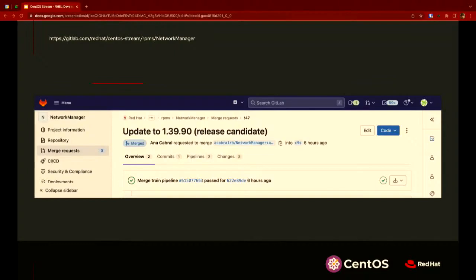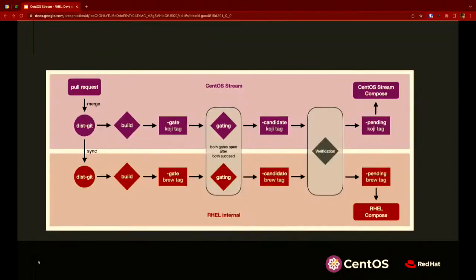This merge request was merged. Looking back at the diagram, we're about here in the process. The merge request was merged, and the maintainer can kick off a build in the Stream infrastructure. These are kept in sync by automation — a build happens in the Stream infrastructure, and then there's a corresponding build inside Red Hat. This allows us to verify and test on the bits that RHEL is actually going to ship. Right now, that NetworkManager version is still stuck in RHEL gating.